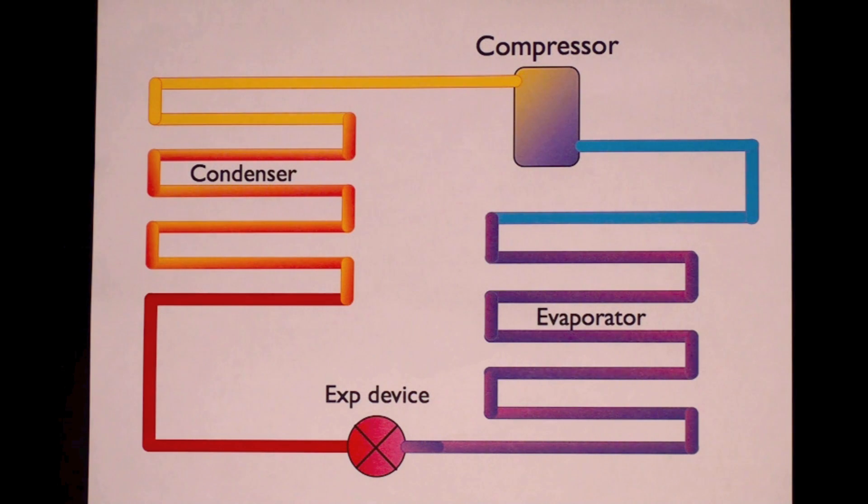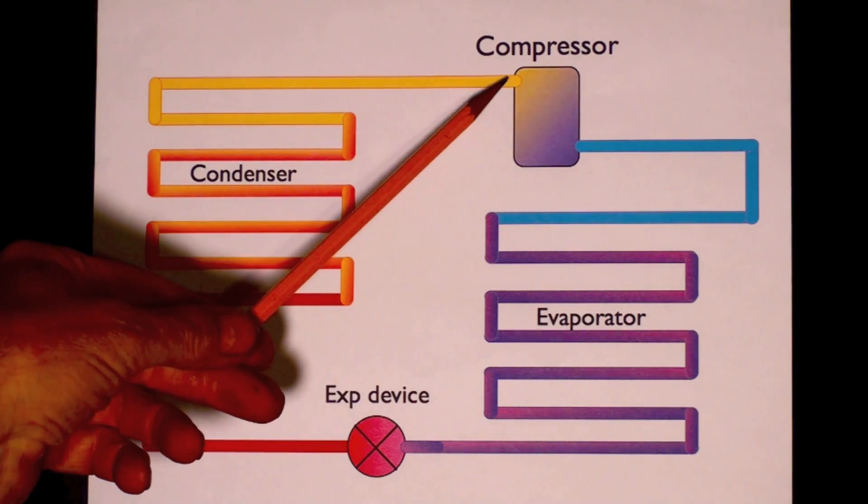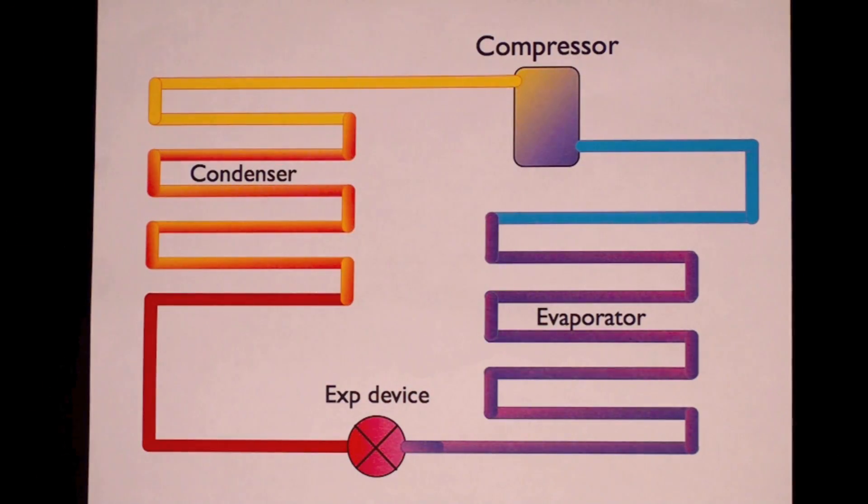So let's follow this refrigerant as it comes out of the compressor. Okay, now it's a high pressure gas. We call it highly superheated hot gas. It passes out of the compressor. It goes to the condenser. The top part of the condenser takes that high superheat off and drops its temperature. When it reaches past the first couple of runs in the condenser, it begins condensing.